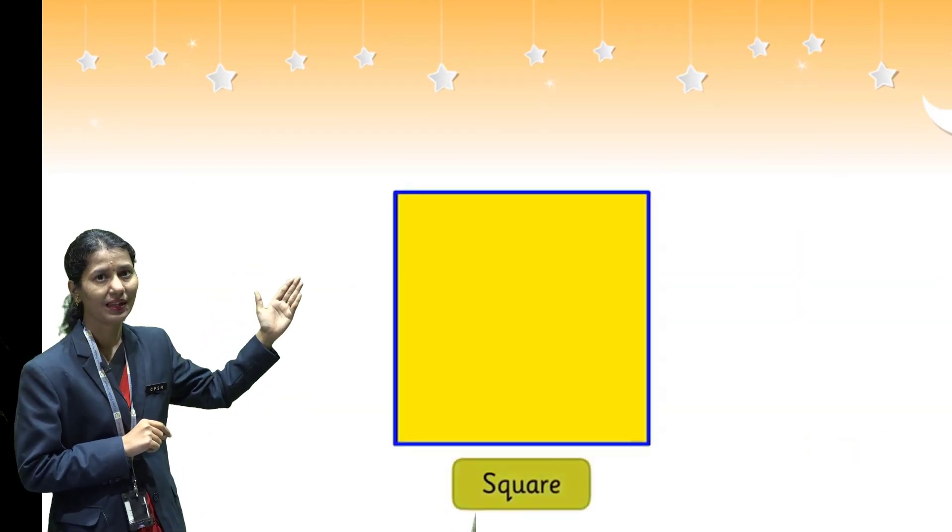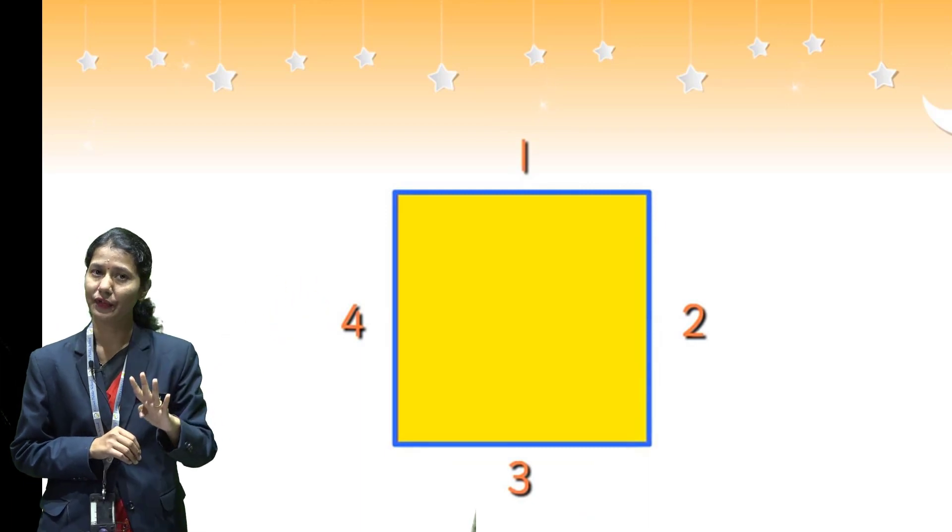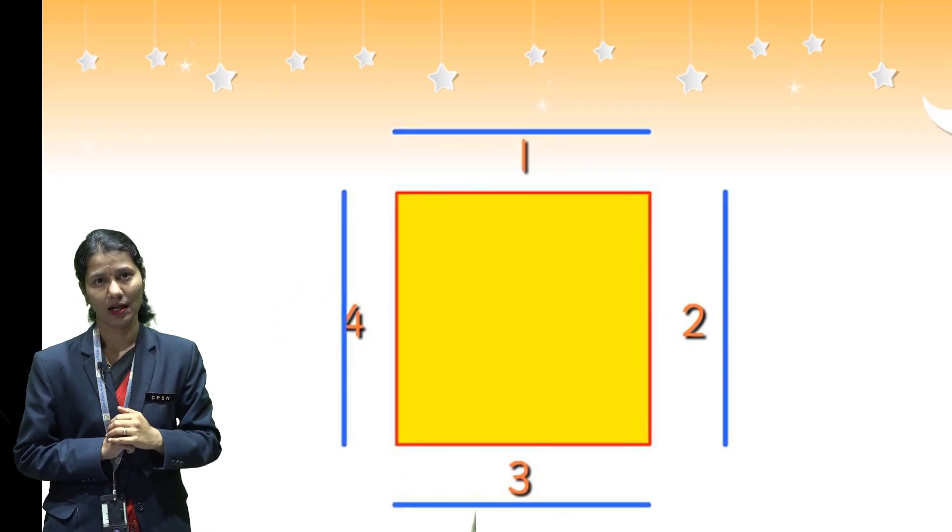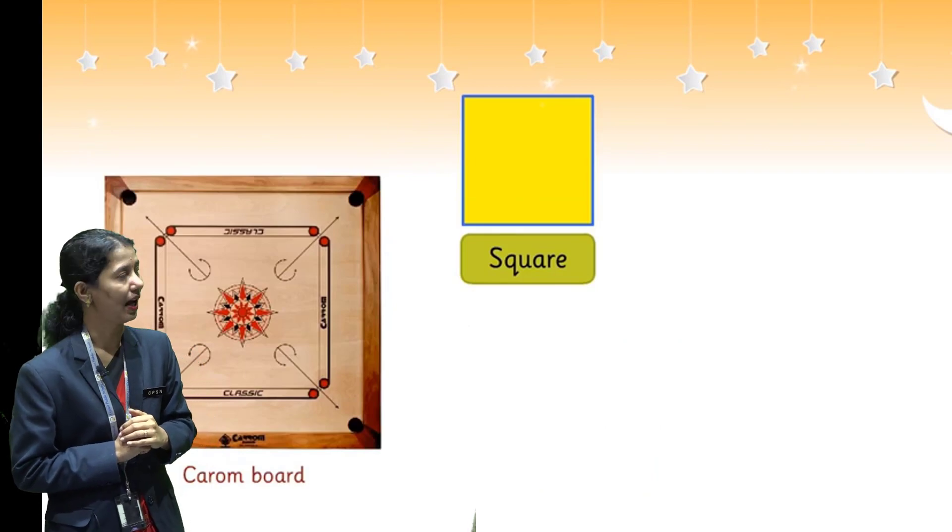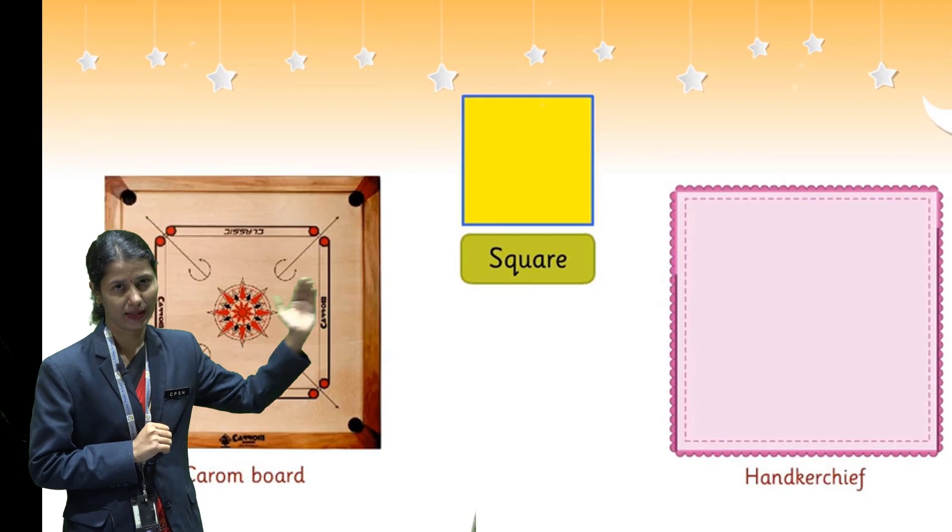This is second shape. This is called square. Square has four equal sides and four corners. Examples of squares are a carom board and a handkerchief.